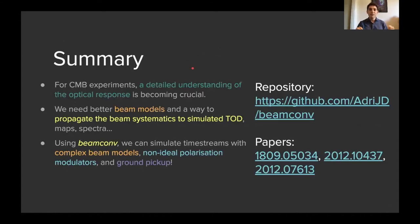So today I want to talk about optical effects in CMB experiments, and how a detailed understanding of the optical response of your telescope is becoming quickly very crucial. And how to achieve this, we need better beam models, which is a term I'm going to define soon, and a way to propagate the systematics associated with beams to simulated sets of time-ordered data, so what's recorded by detectors over time as they scan the sky, and how that will then propagate to CMB maps and CMB spectra.